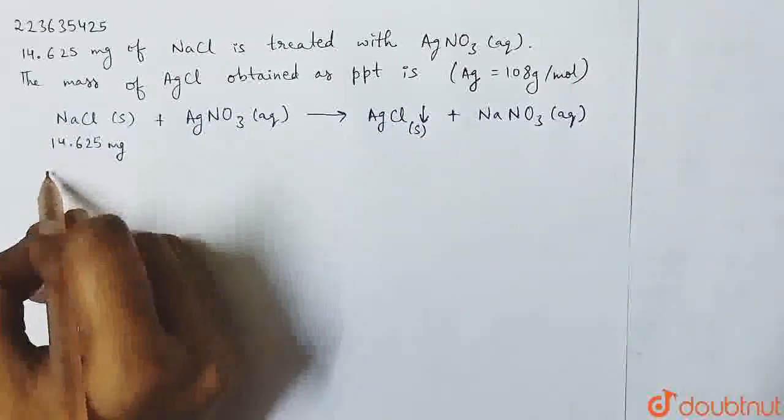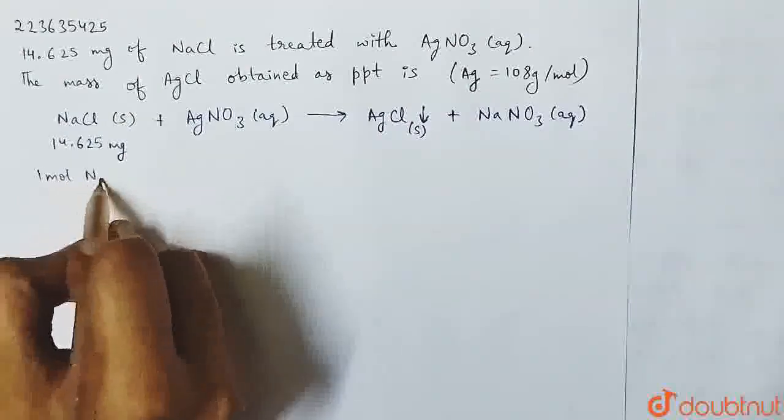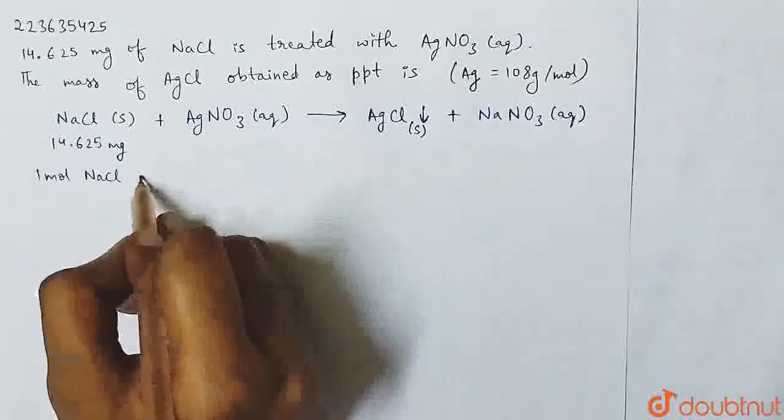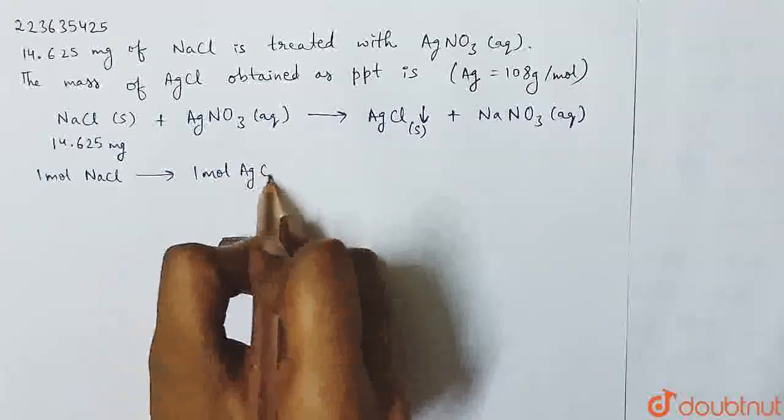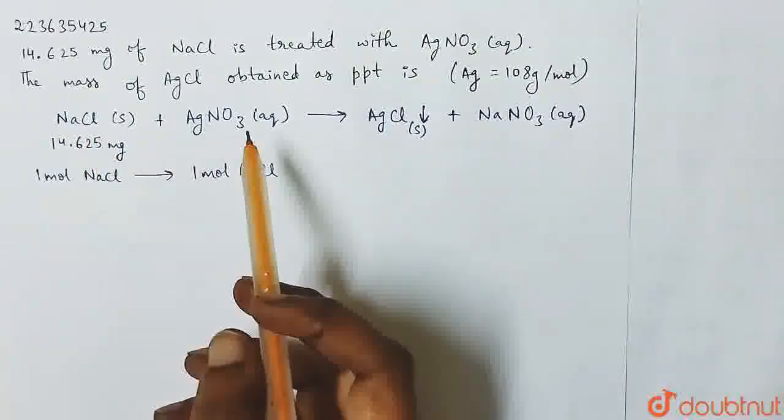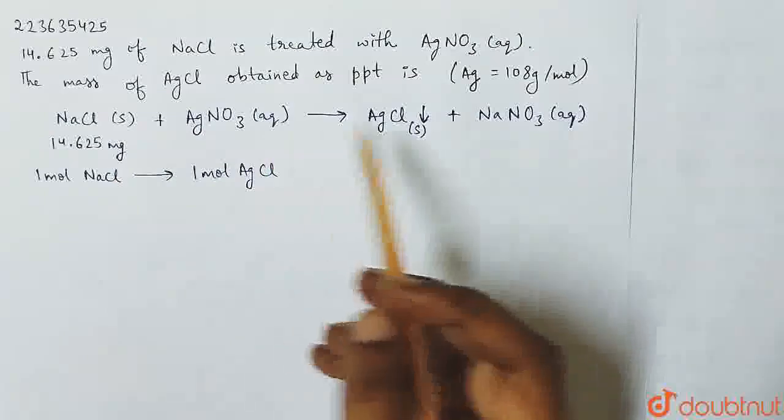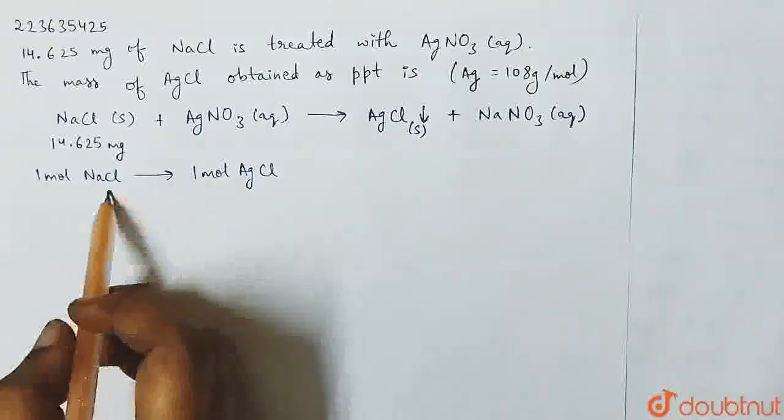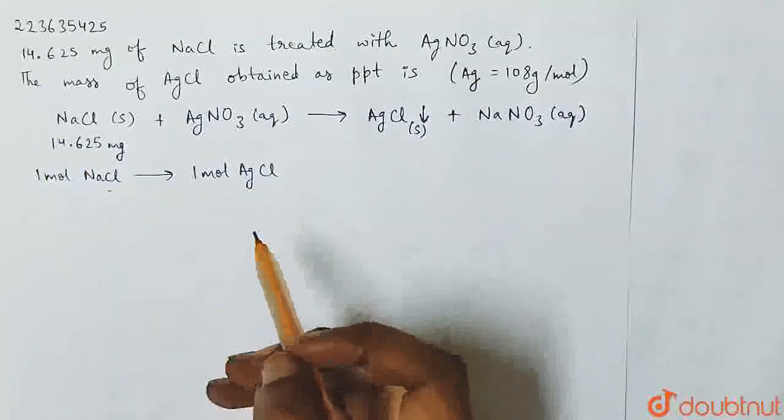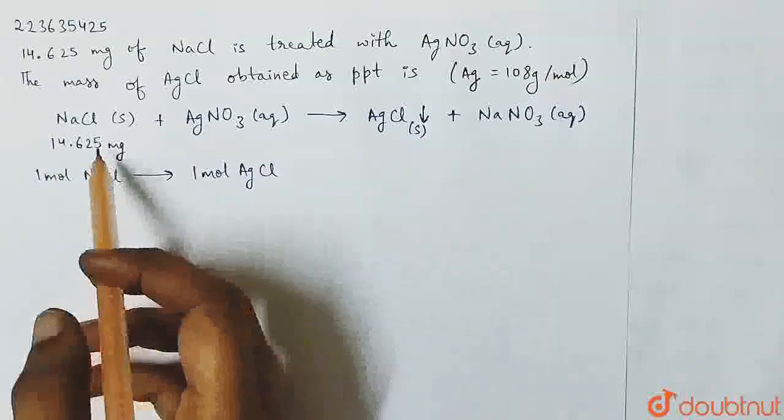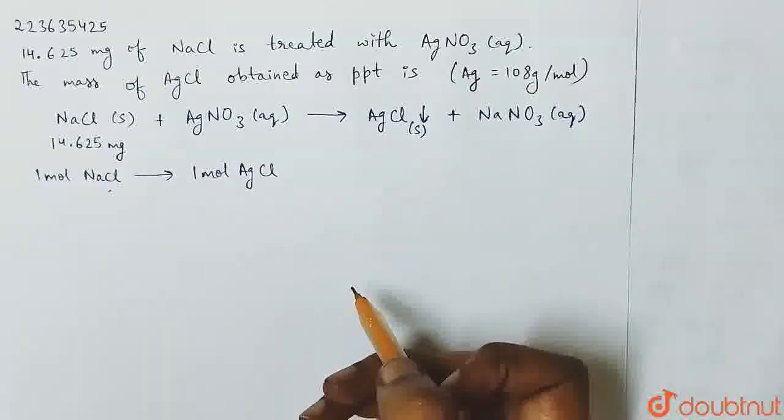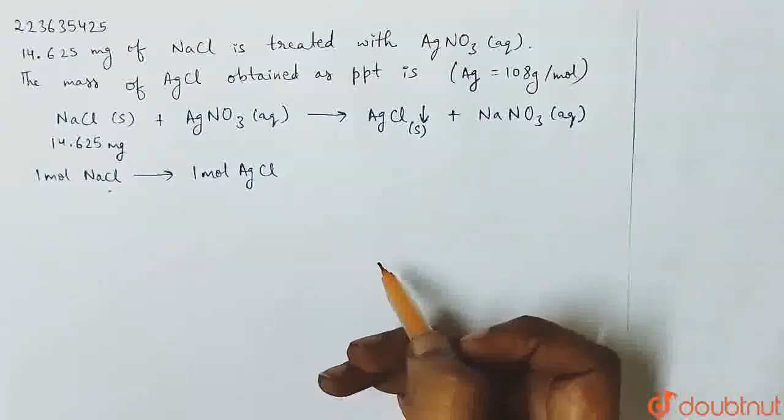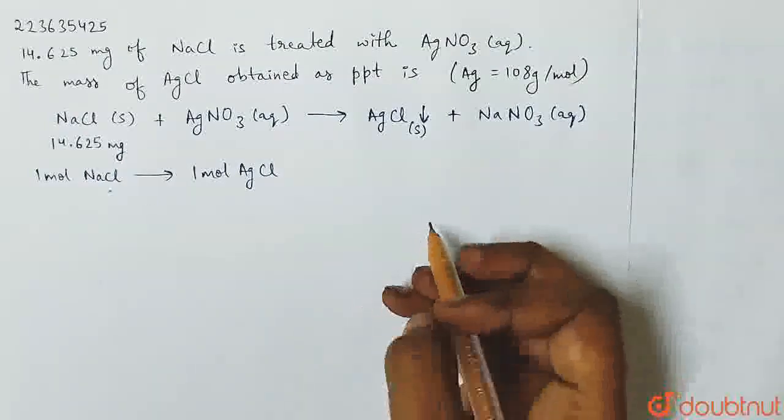Here we have 1 mole NaCl forms 1 mole AgCl. The reaction is balanced already. All atoms are equal in numbers. We have mass given. Here we have NaCl given and AgCl to find the mass. We have to convert the moles into the mass. This is why we use the mole relation.